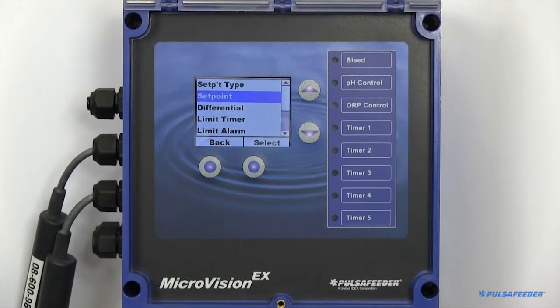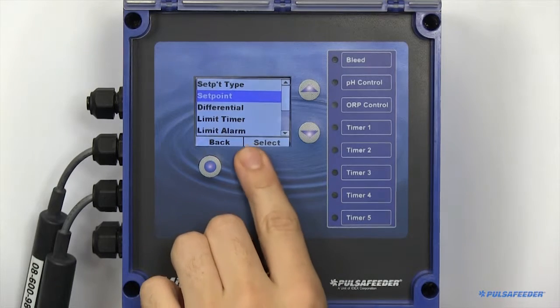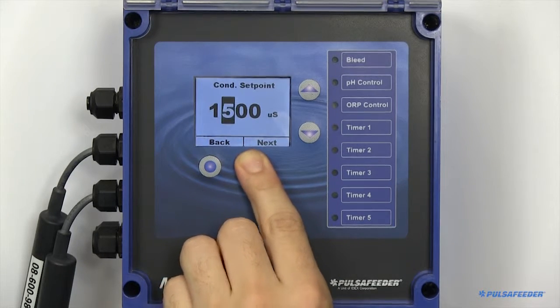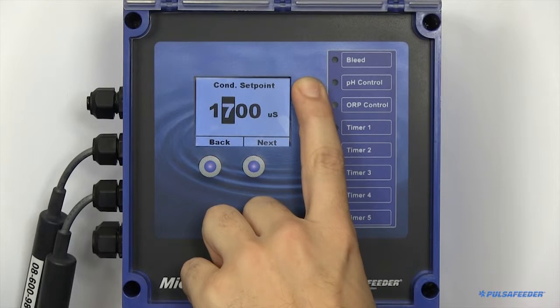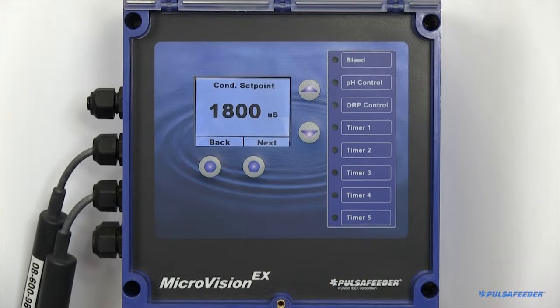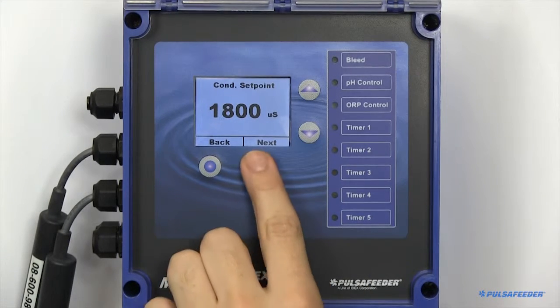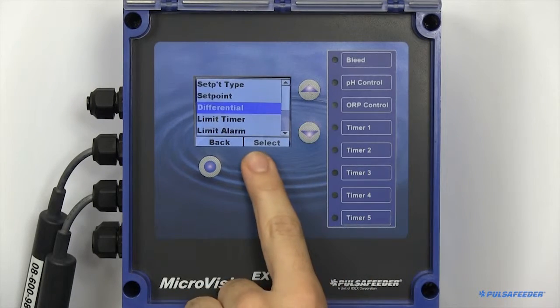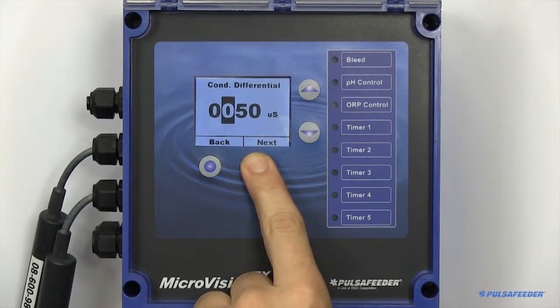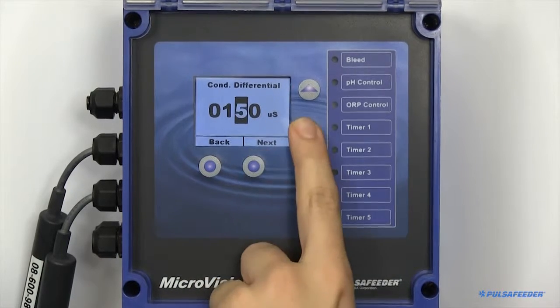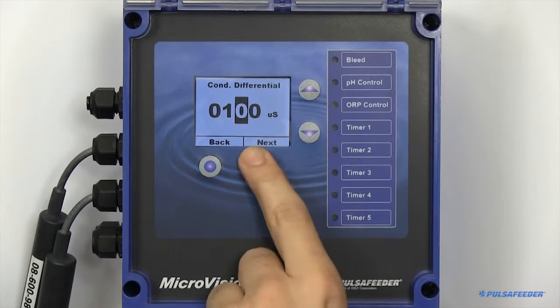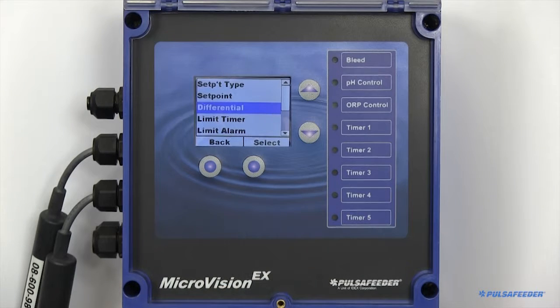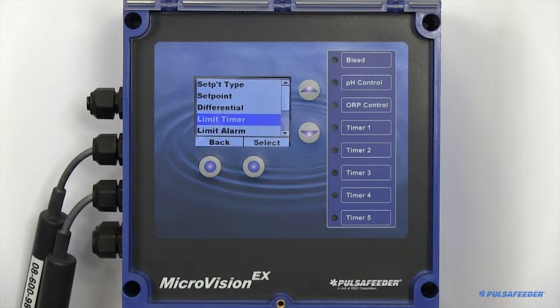Your set point is where the desired function will begin. The differential, or dead band, is the offset value which must be satisfied before the relay will turn off. Limit timers can also be enabled.